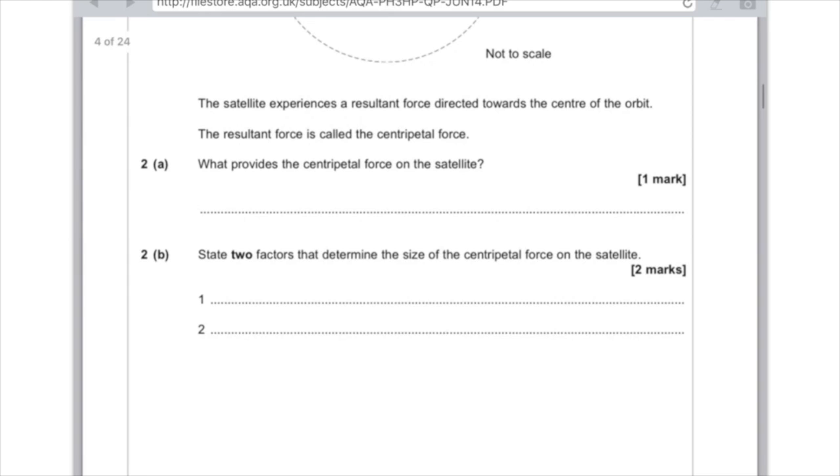2b. State two factors that determine the size of the centripetal force on the satellite. So yes, like I said, this question comes up a lot. So you want to talk about the mass of the satellite and also its speed or velocity. And lastly, you could have mentioned the radius of its orbit.